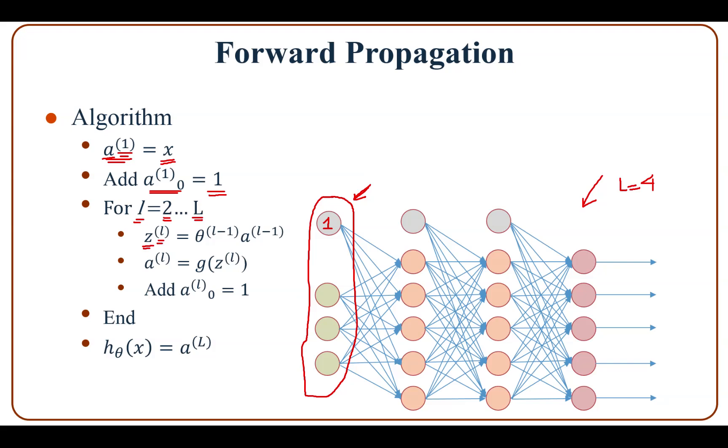Z at layer L is equal to theta_L minus 1 times a_L minus 1. Then we apply the nonlinear function g to Z_L to get a_L, and then we also add a_L_0 which is actually equal to 1.